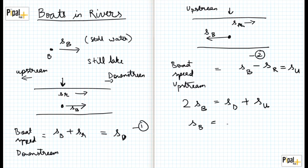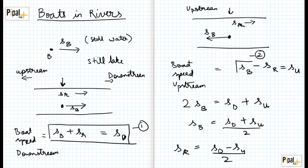This equals speed of the boat downstream plus the speed of the boat upstream. So speed of the boat in still water can be given by its speed downstream plus its speed upstream divided by two. Similarly, the speed of the river can be found out by subtracting two from one, where we get SD minus SU divided by two. So we can use the speed of the boat downstream and the speed of the boat upstream to calculate the speed of the boat in still water and the speed of the river.